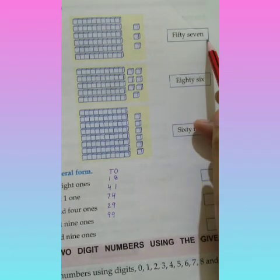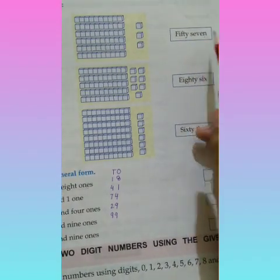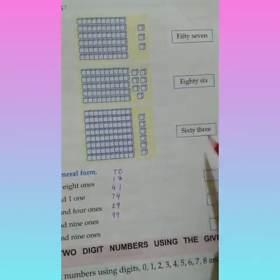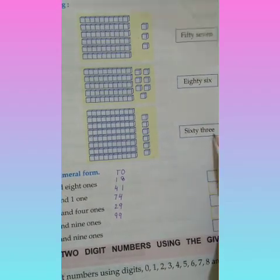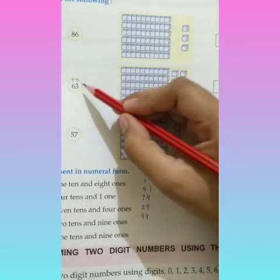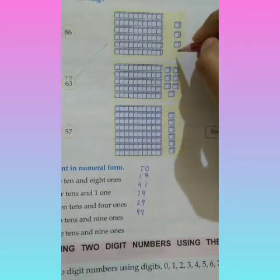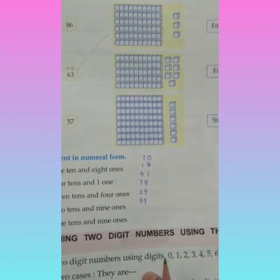And here, in the other column, what do we have? 57, 86 and 63. Here, we have 63. So, we are going to match the numbers with this spelling. 63. We are going to match them with 63.